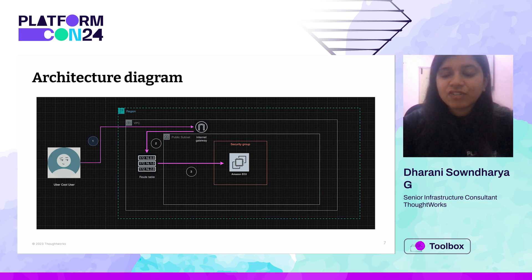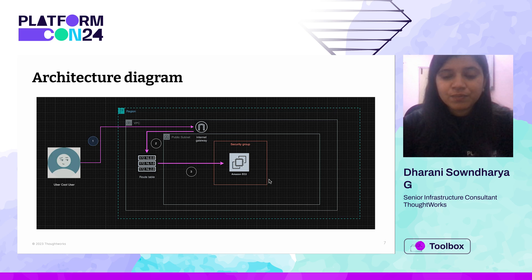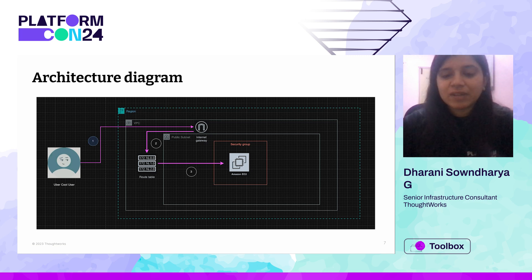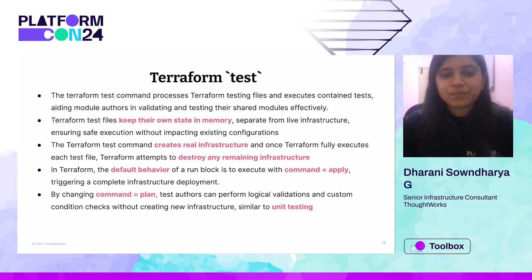Here is a simple architecture diagram for this demo. There is an EC2 instance launched in a public subnet which is connected to a VPC. The user would be able to hit the web server launched in the EC2 instance. It's as simple as that.